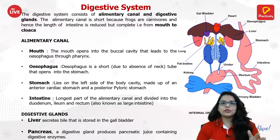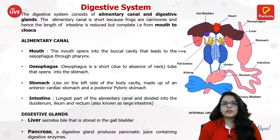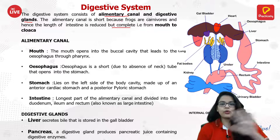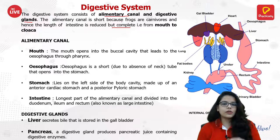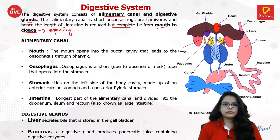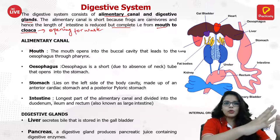Now for the anatomy — starting with the digestive system. The digestive system consists of the alimentary canal and digestive glands. The canal is short because frogs are carnivores; since they don't eat plant material, the intestine length is reduced. The alimentary canal starts from the mouth and ends at the cloaca, which is the opening for waste products.